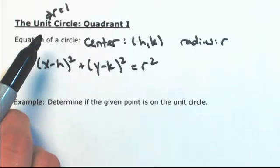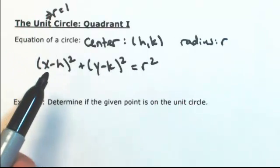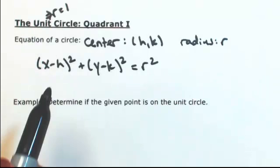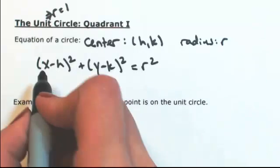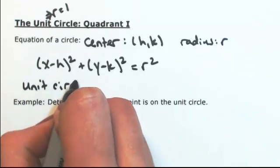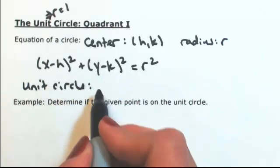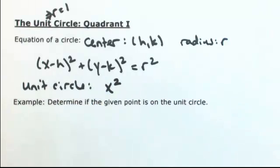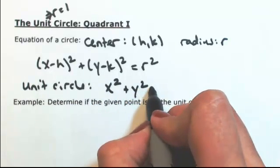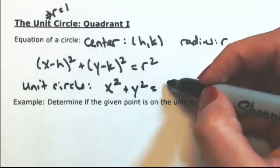Since we're talking about the unit circle, r is 1 and the center is at the origin, so h and k are 0. For the unit circle, we have x squared plus y squared equals 1 squared, which is 1.